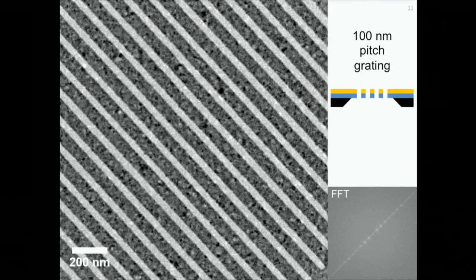This figure shows a bright field TEM image of the fabricated nanogratings with 100 nanometer pitch. We can also take the fast Fourier transform of this image, and we can see the individual spots in the Fourier transform, which corresponds to the spatial periodicity of this nanograting.